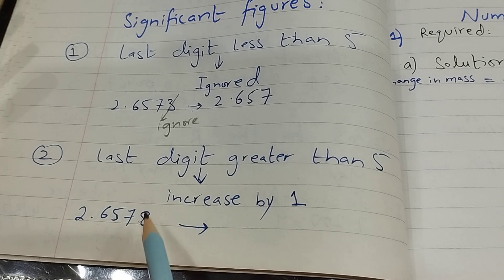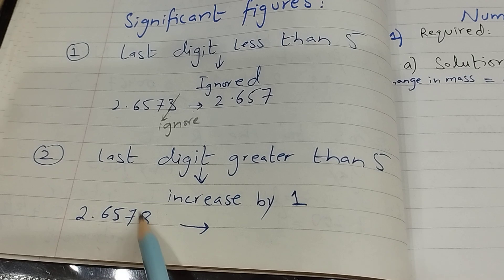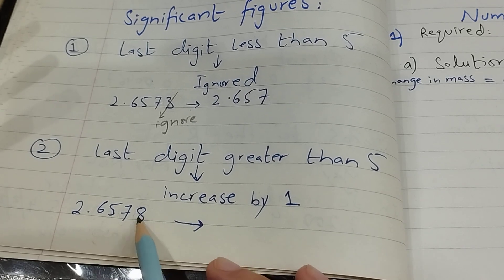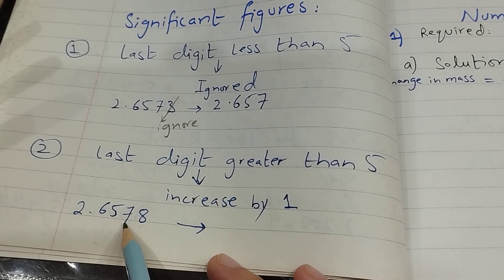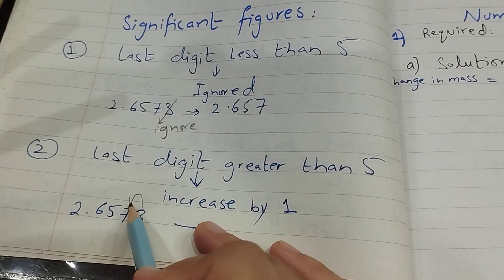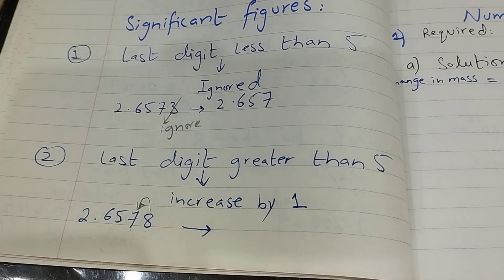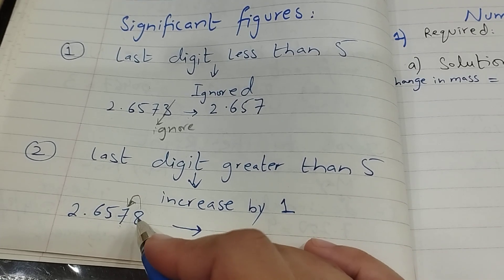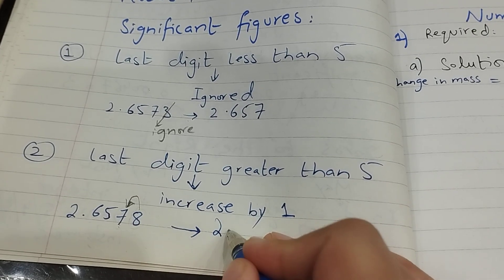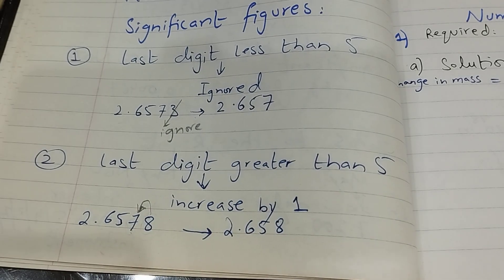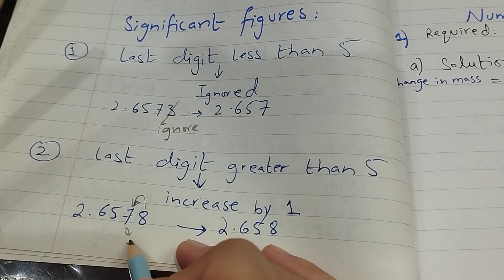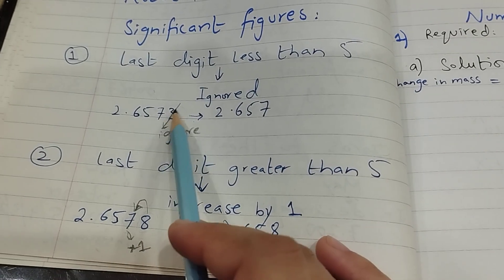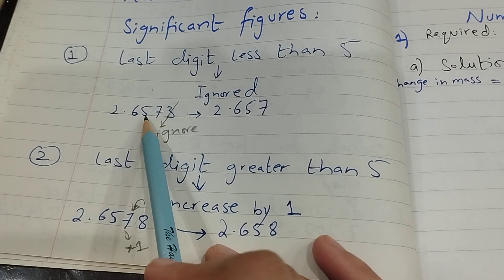इसका मतलब यह है कि इस eight के साथ वाले number को हम one से increase कर लेंगे। अगर last digit greater than five है तो साथ वाला number one के साथ plus होकर increase हो जाएगा। तो 2.6578 में last digit greater than five है, तो बन जाएगा 2.658 — क्योंकि seven के साथ plus one हो गया। Rule 1 में ignore करते हैं, Rule 2 में increase by one।